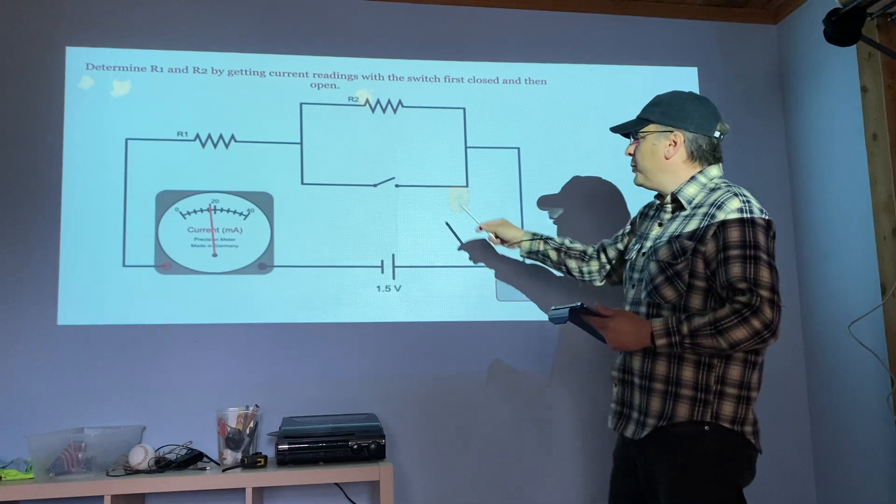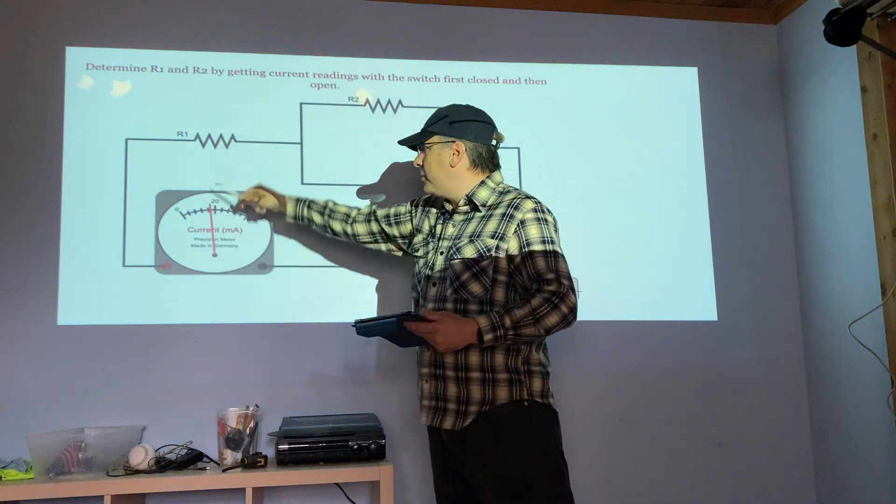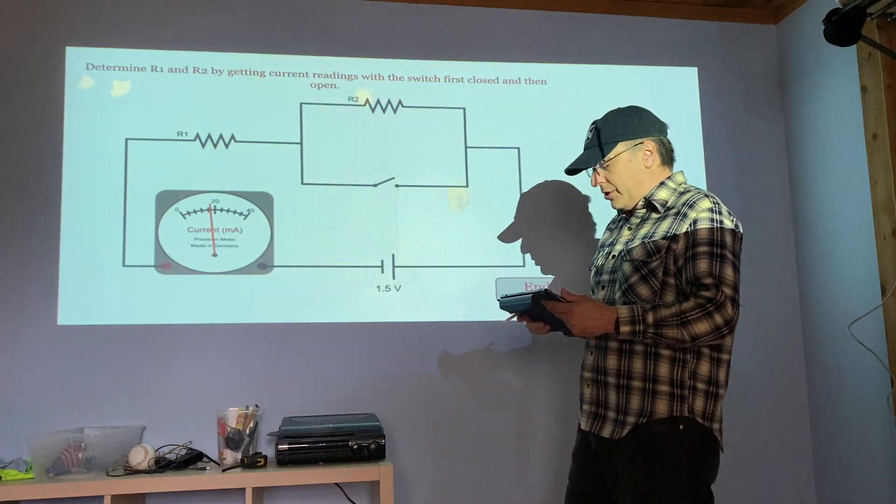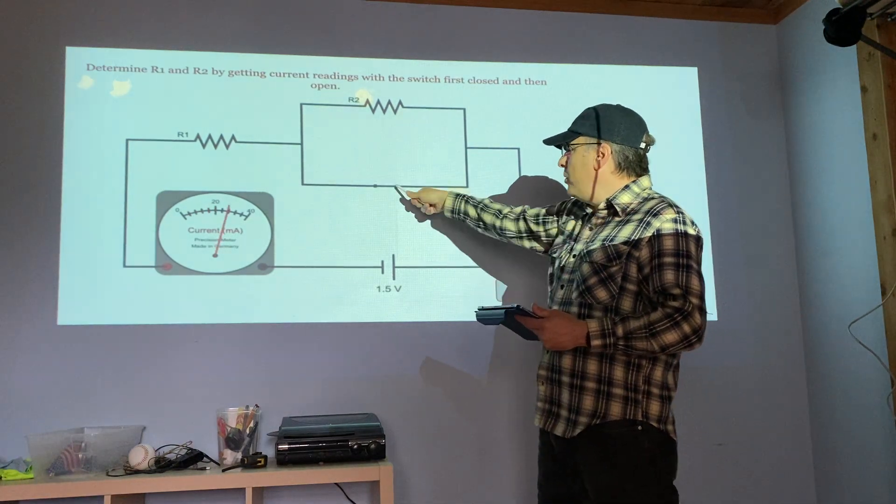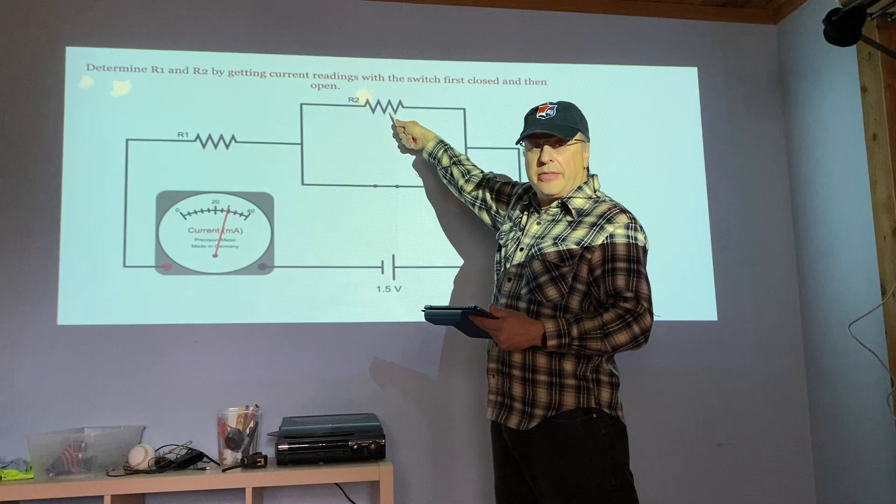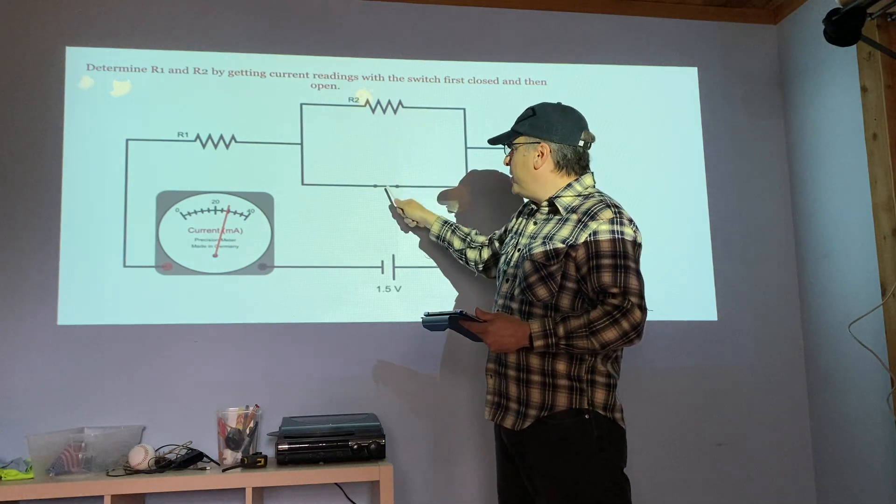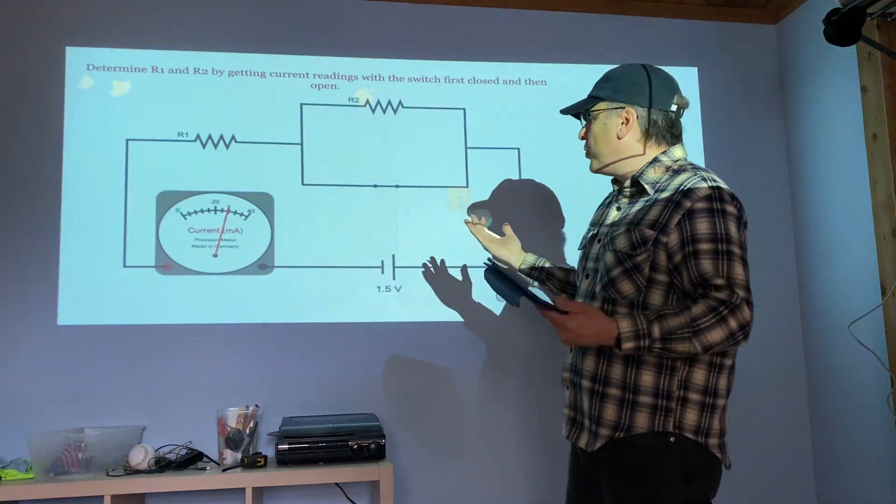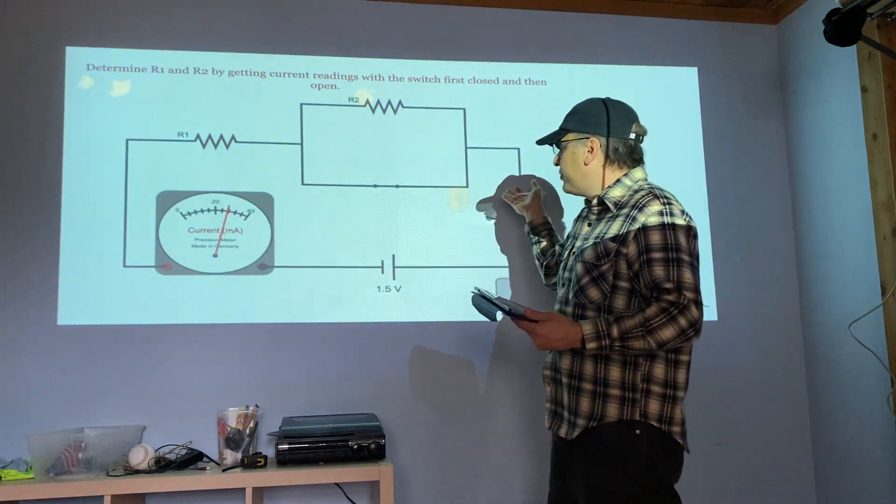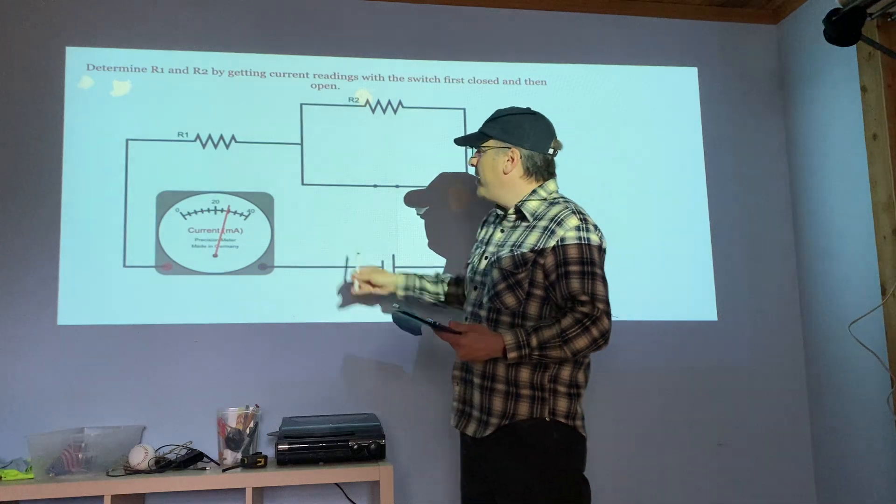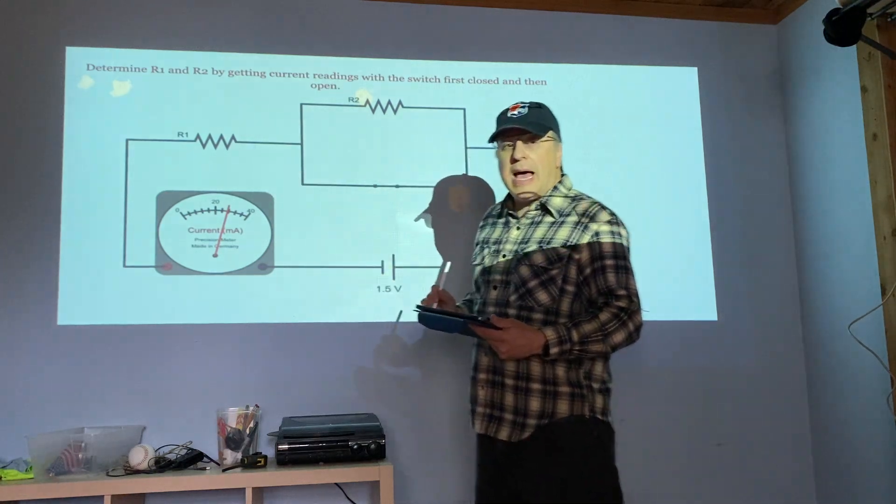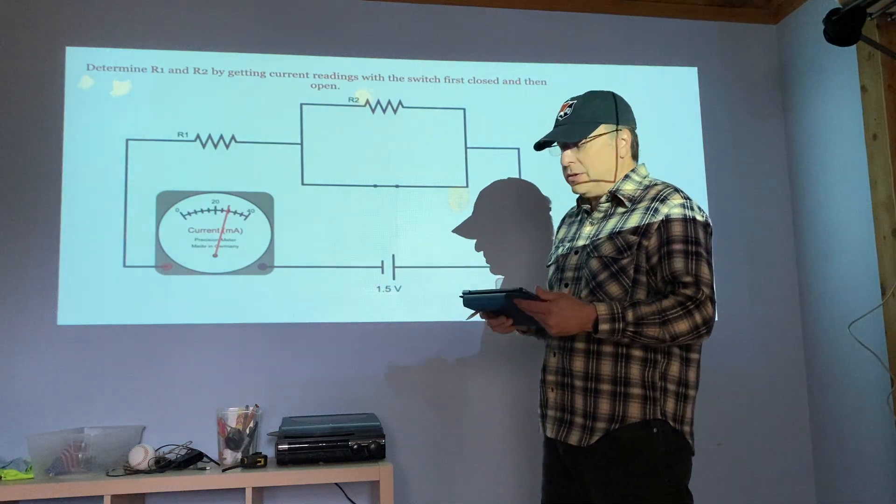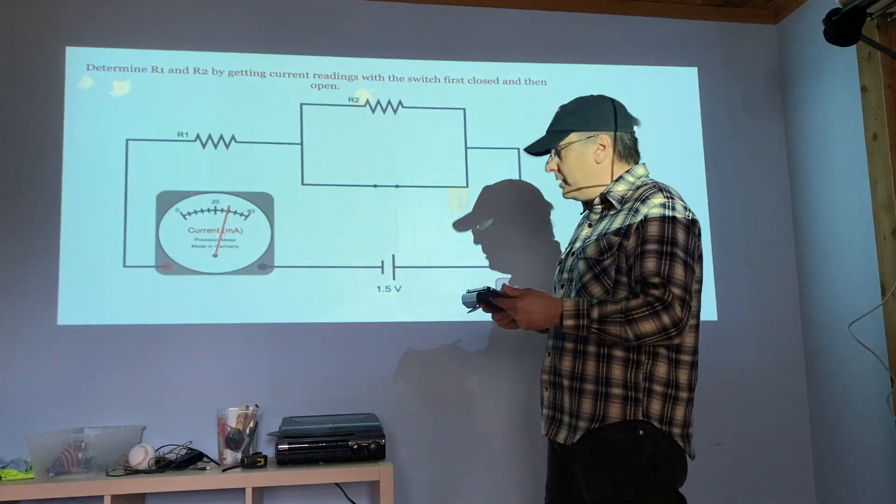Yesterday we saw with the switch open, the current took the top path and it was like we had a series circuit. When we closed the switch, we shorted out this top resistor because now we had a path of no resistance. This gives us a short circuit where all the electricity takes the bottom path and the only resistor that's active will be R1.